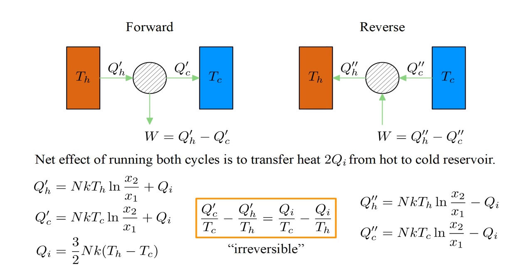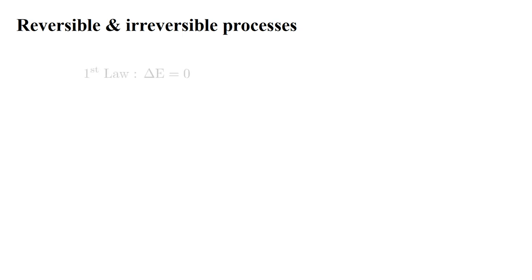It seems that the irreversibility of the Stirling cycle might be related to the increase of this somewhat mysterious quantity. It's becoming clear that central to the second law is the concept of reversible and irreversible processes. We need the second law because other laws of physics, such as the first law, cannot distinguish between these two types of processes. The first law tells us that energy is conserved, so for any process in a closed system, the change in energy delta E is zero.